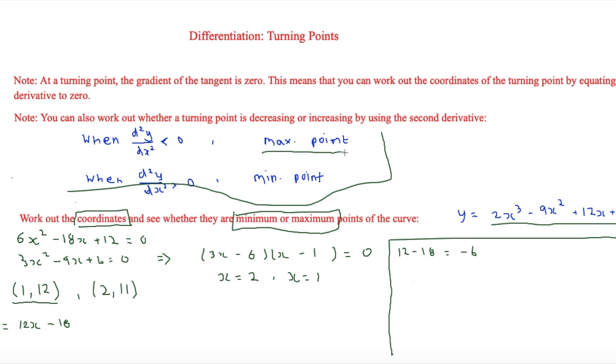Now then we'll look back to here and -6 is less than 0. Now that would mean that as it is less than 0, (1, 12) is a maximum point.